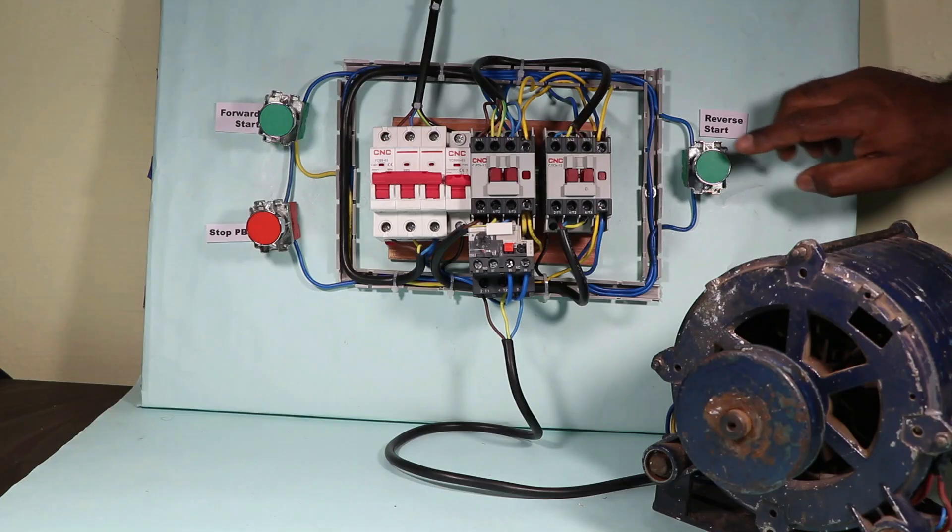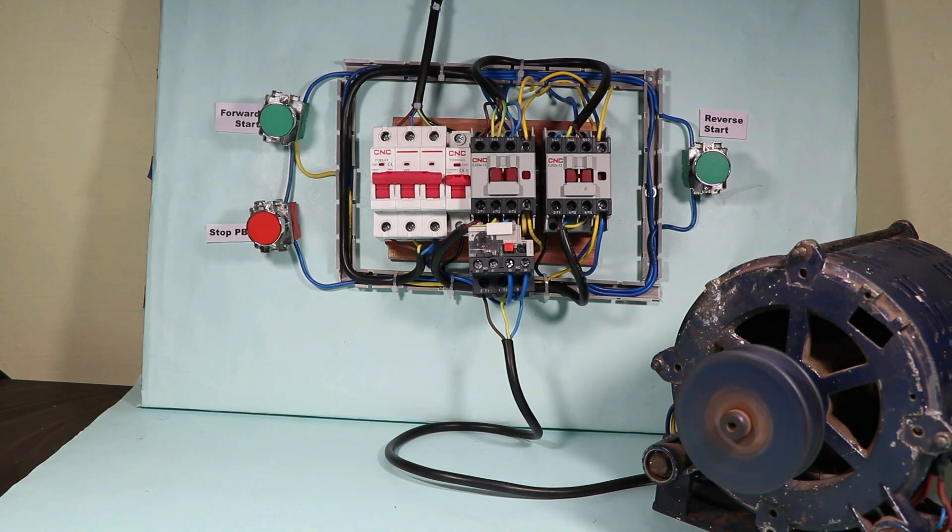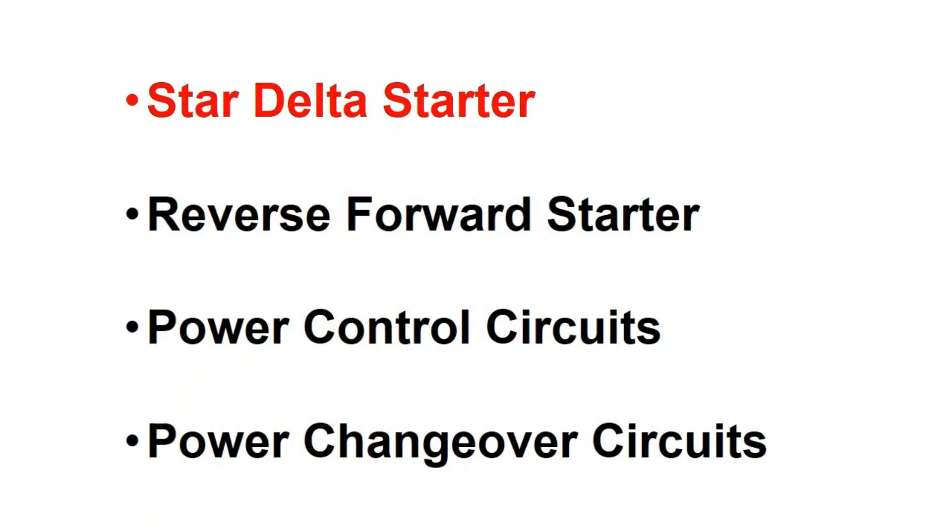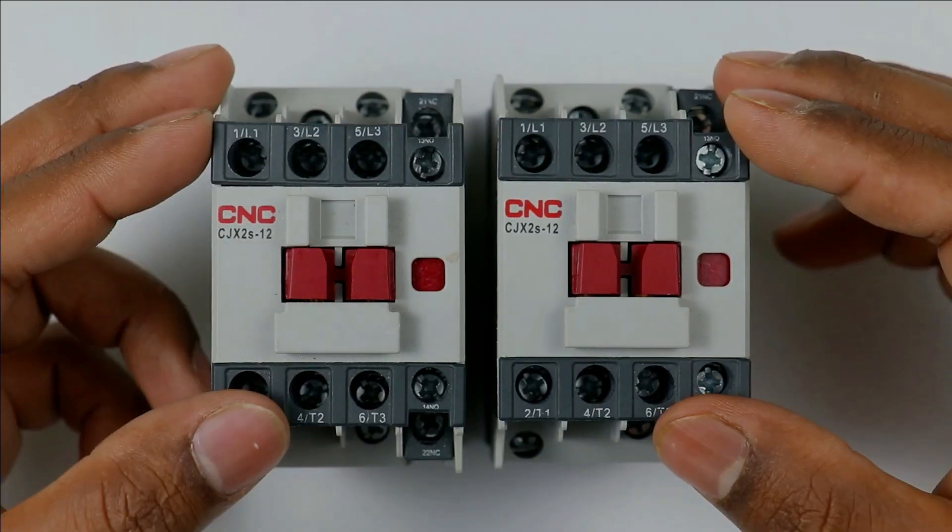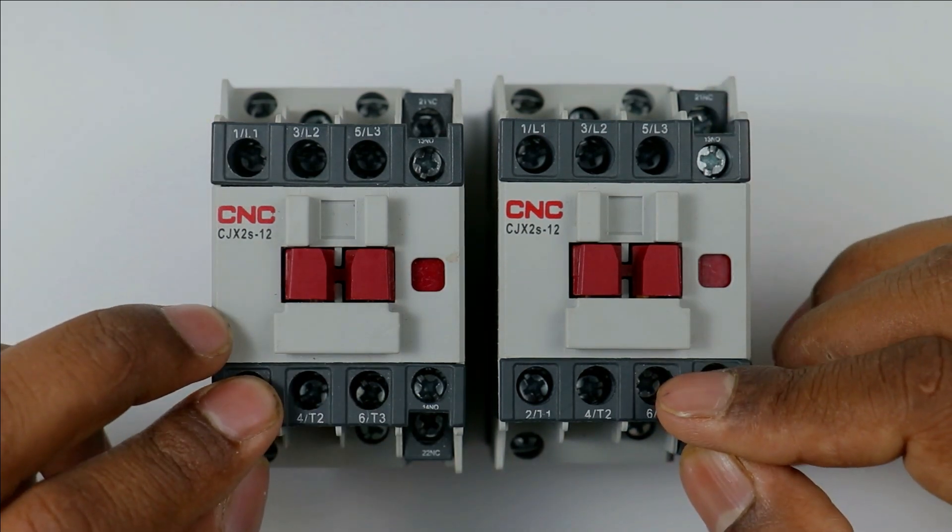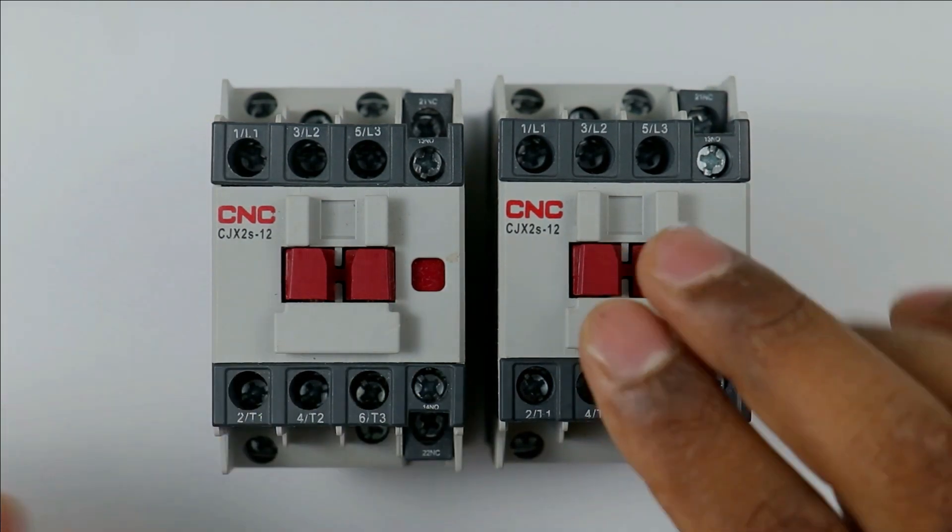I just now explained through motor, but apart from this condition, there are various other cases in which interlocking is necessary. Where we need interlocking, you can see on the screen. For now, I have these two contactors and I have to interlock them. To interlock them, I have two options.